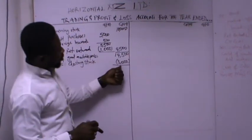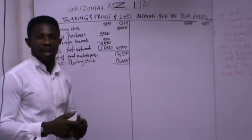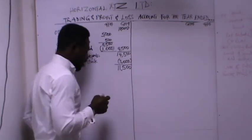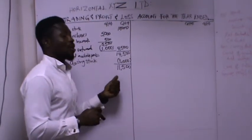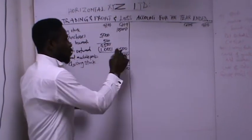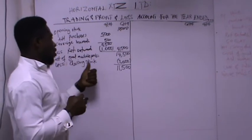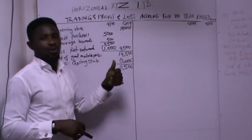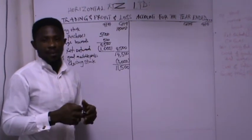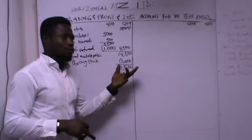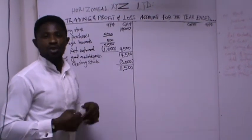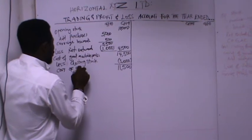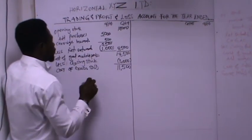When we take out our closing stock of 3,000 Ghana cedis from the cost of goods available for sales, we get 11,500 Ghana cedis. This 11,500 is our cost of goods sold. At the end of the period you were not able to sell all the goods, so you take the unsold goods out of the total cost available for sales to get your cost of goods sold.